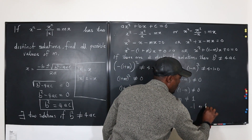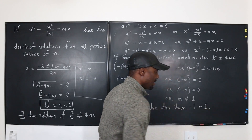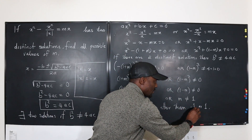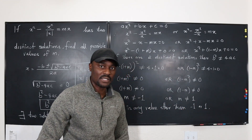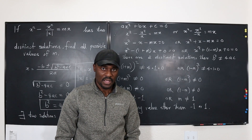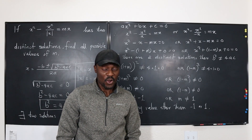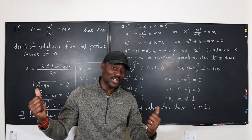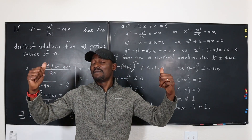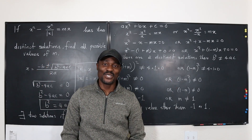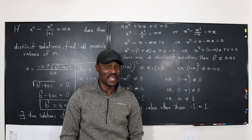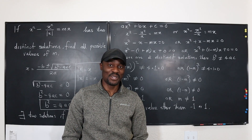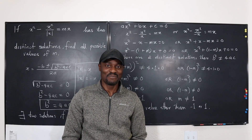If you avoid these two numbers — m equals negative 1 and m equals 1 — you will get two distinct solutions. I hope you learned something in this video. If you did, make sure you give it a like, a share, and leave a comment. I'll see you in the next video — never stop learning, because those who stopped learning have stopped living.